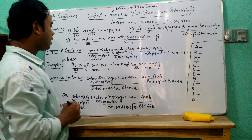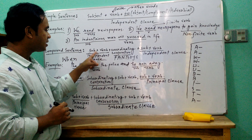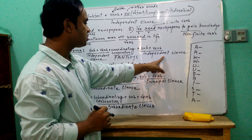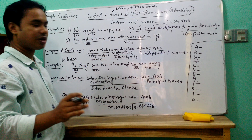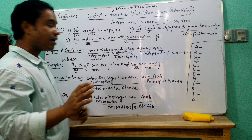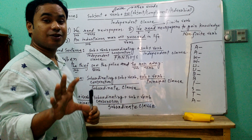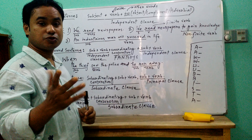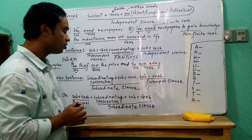So, you can say this is one simple sentence and this is another simple sentence. These two simple sentences are joined together by a coordinating conjunction to make a compound sentence. To make a compound sentence, you must use a coordinating conjunction.